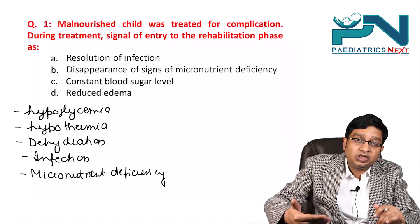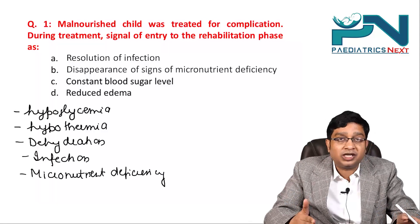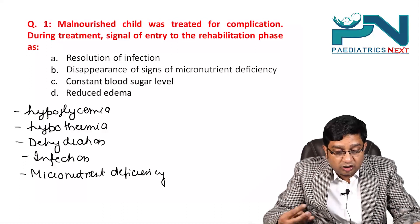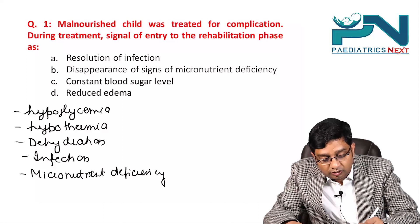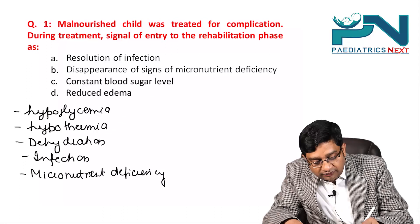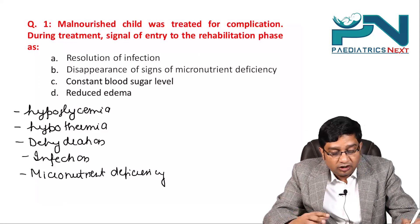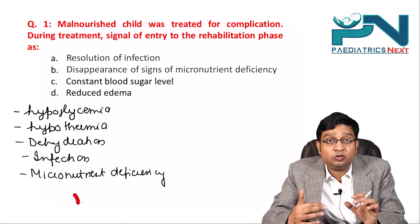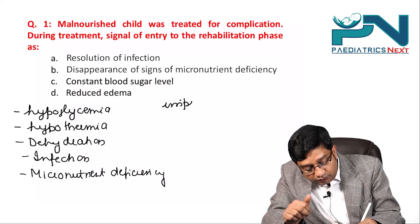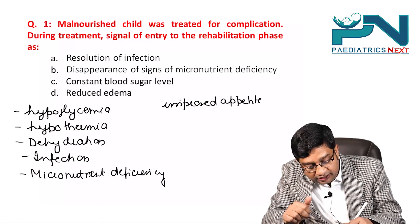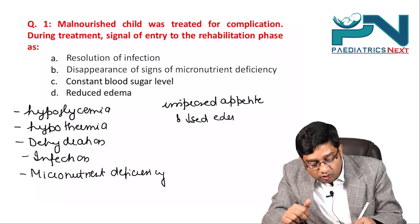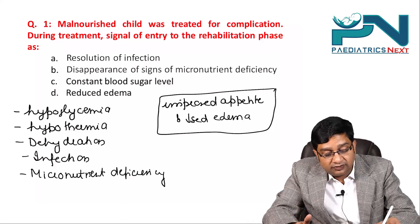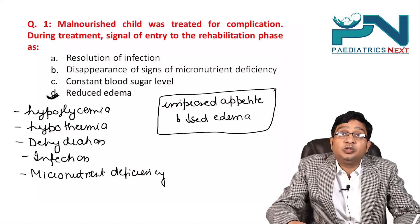After the complications are corrected, you move on to the nutritional rehabilitation phase, where there is phase one, then a transition phase, and then phase two. Looking at the choices — resolution of infection, disappearance of signs of micronutrient deficiency, constant blood sugar level, and reduced edema — only two things to remember: if there is improved appetite and decreased edema, you go on to the rehabilitation phase. So the right answer is reduced edema.